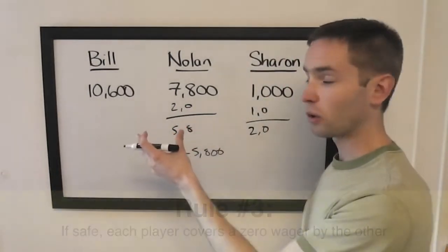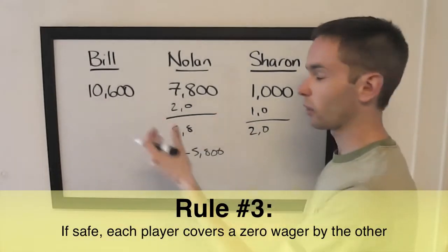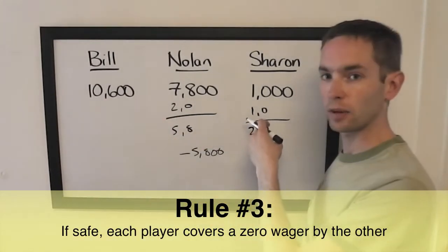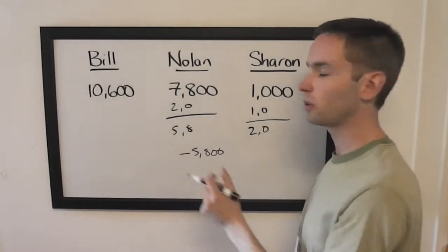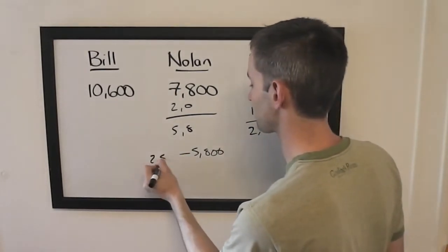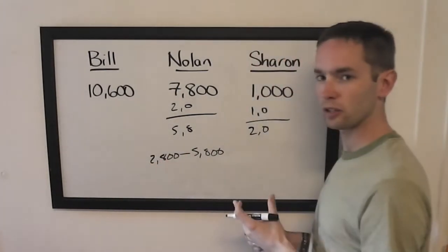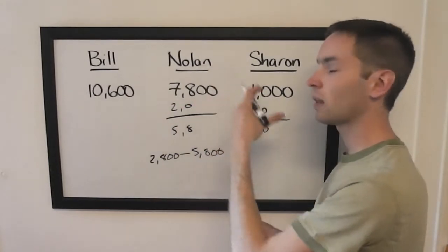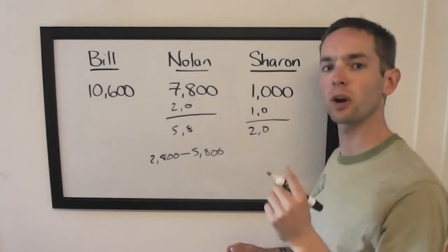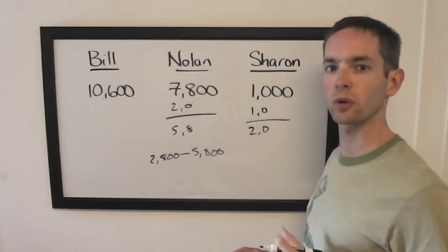Then if we look at rule number three between Bill and Nolan, can Nolan cover a zero wager by Bill while also staying above Sharon? Yes. The difference between these two is 2,800. So you can wager anywhere in this range and cover both a zero wager by Bill and stay above Sharon. Those are the only two criteria for a Shore's conjecture situation.